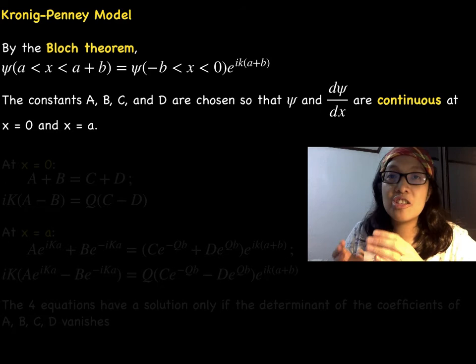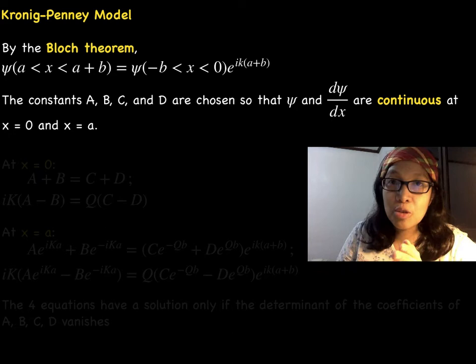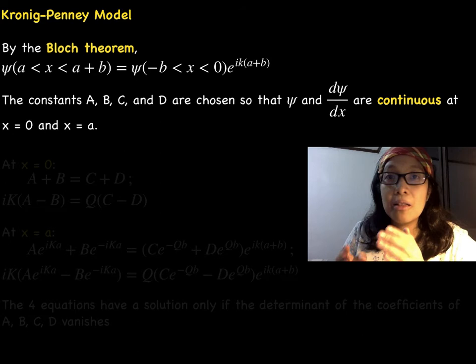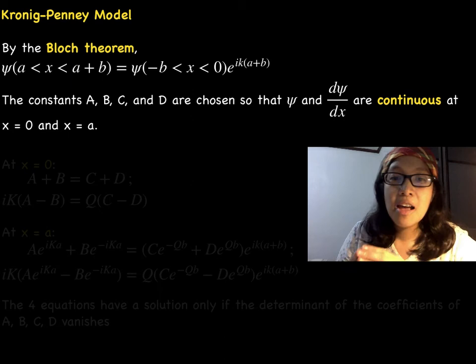The constants A, B, C, and D are chosen such that ψ and dψ/dx are continuous at x equals zero and x equals a. These are usual quantum mechanical boundary conditions in problems involving square potential wells.